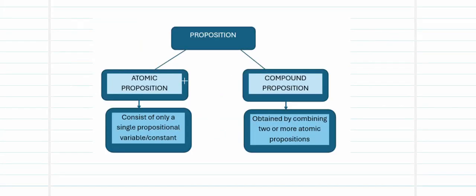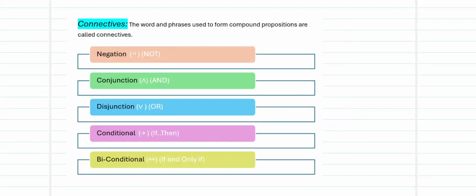Propositions can be broadly classified into two types: atomic propositions and compound propositions. An atomic proposition consists of only one propositional variable or constant. When we combine two or more atomic propositions to form a new statement, we call it a compound proposition. To form a compound proposition, we need something called connectives — the words and phrases used to form compound propositions.